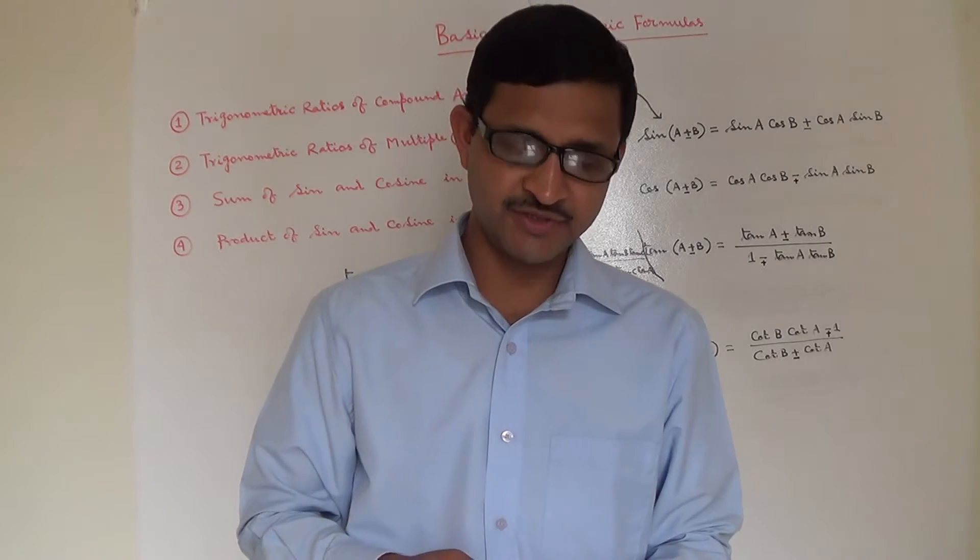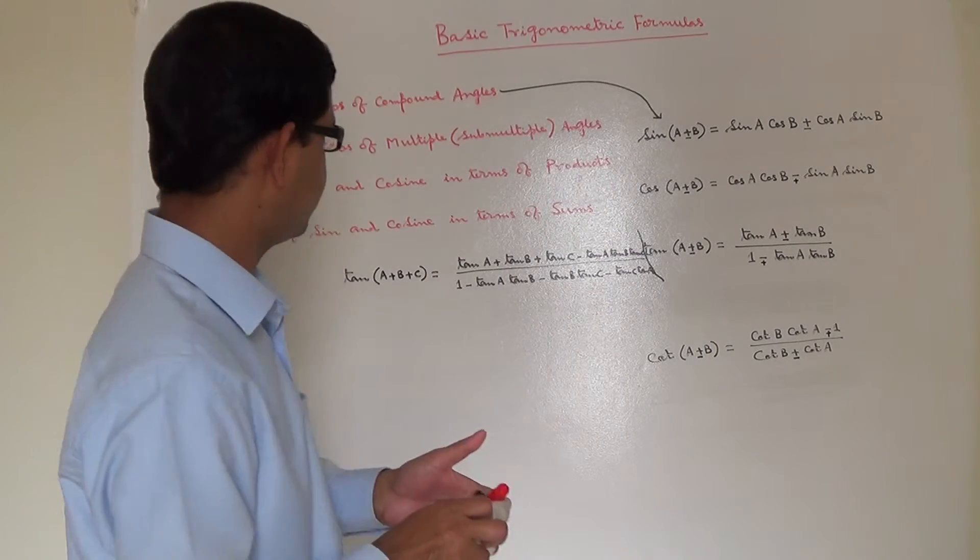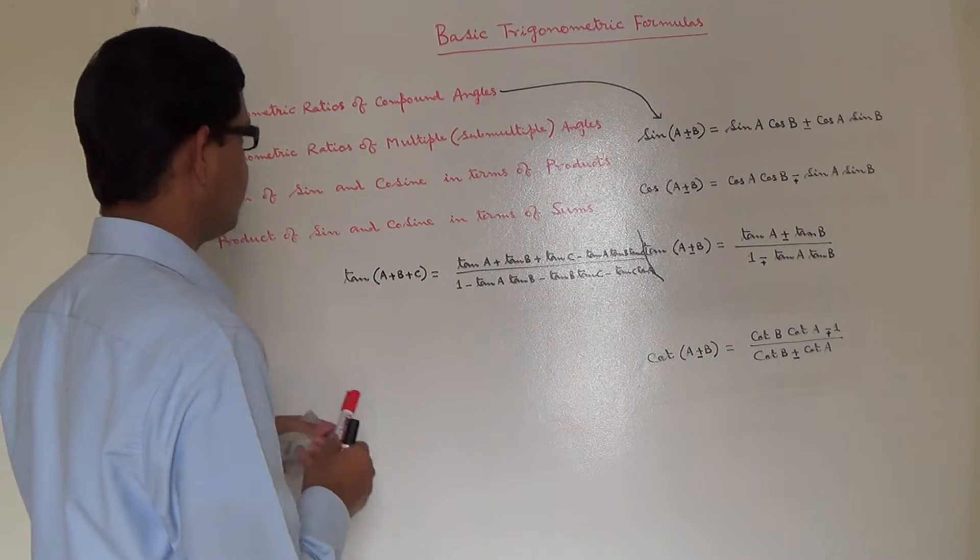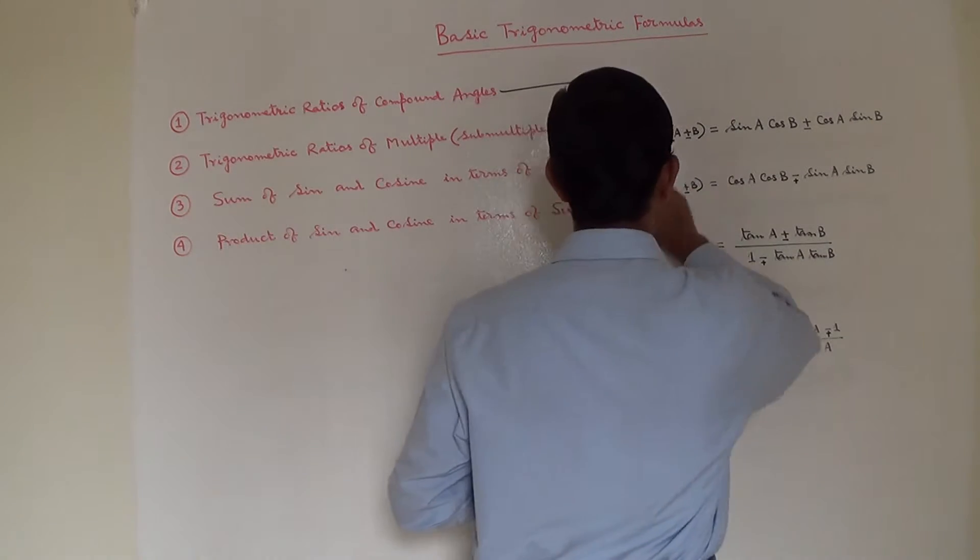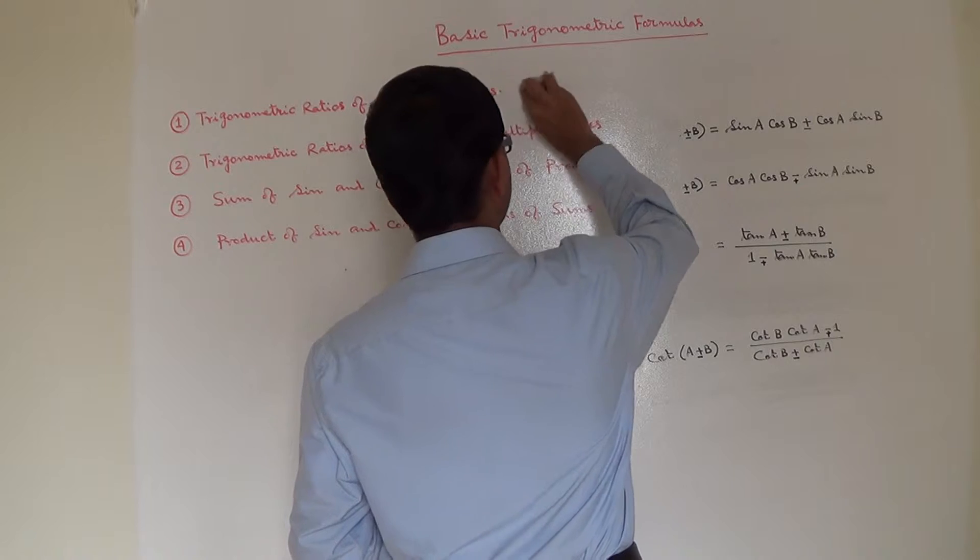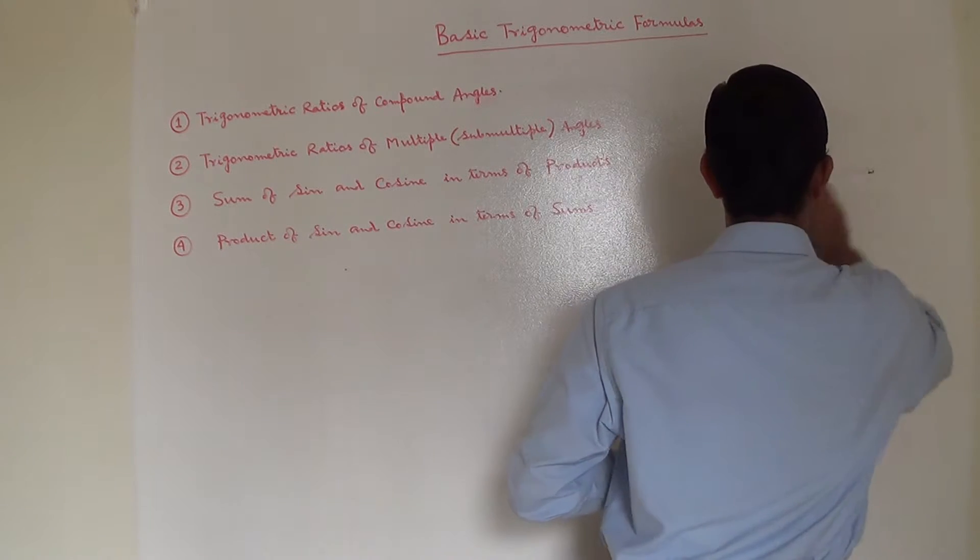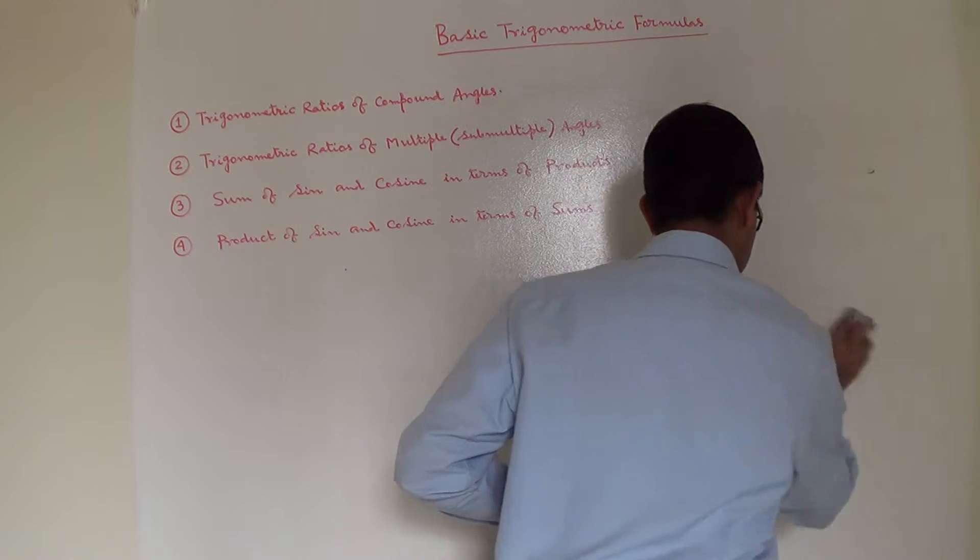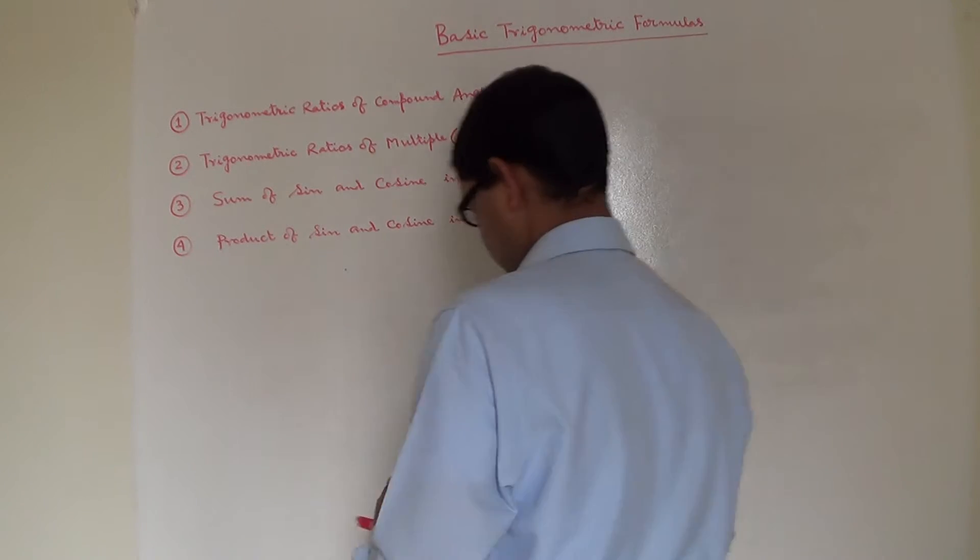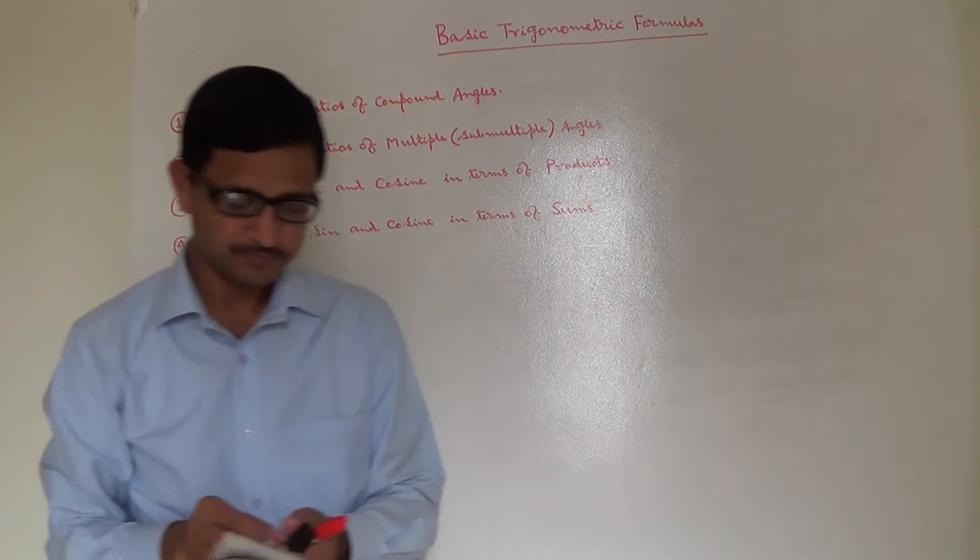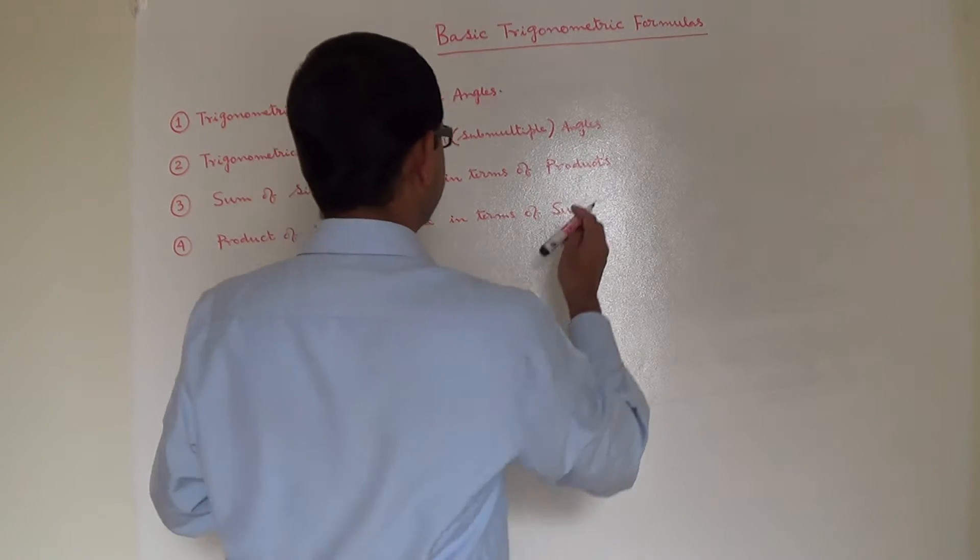All right, so let's proceed for the next set of formulas related to trigonometric ratios of multiple and submultiple angles. Here are the formulas.